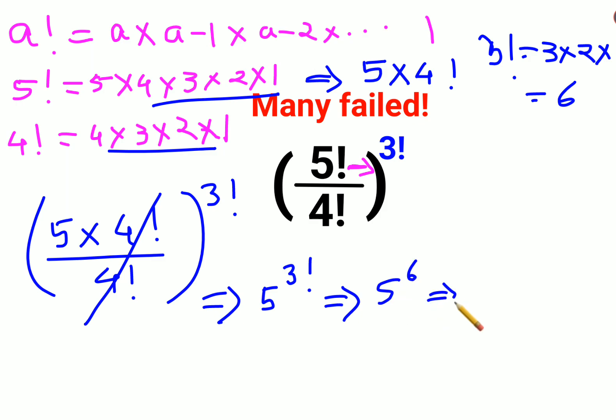Or we can write this as 5 cubed the whole square, that is 125 square.